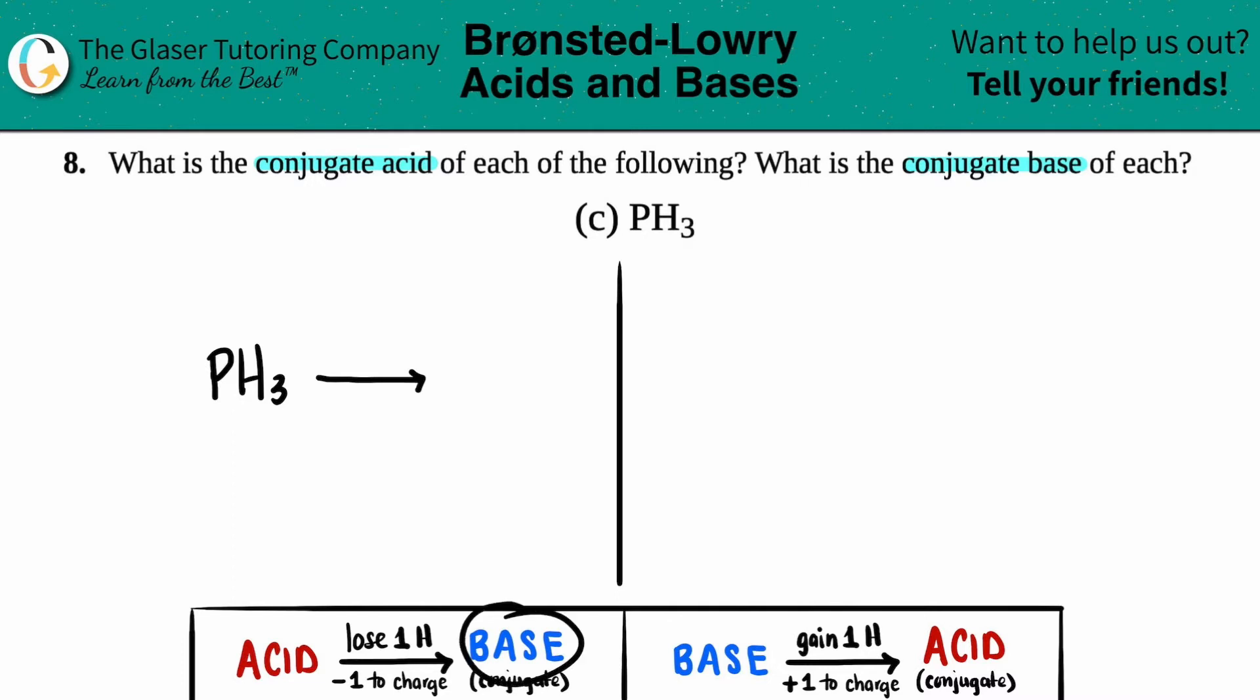Well, remember, bases are just one less hydrogen than its acid. So all you got to do is just ditch the hydrogen. You take a hydrogen away. So in this case, it was PH3. So all you got to do is just drop the 3 and bring it down to a 2.